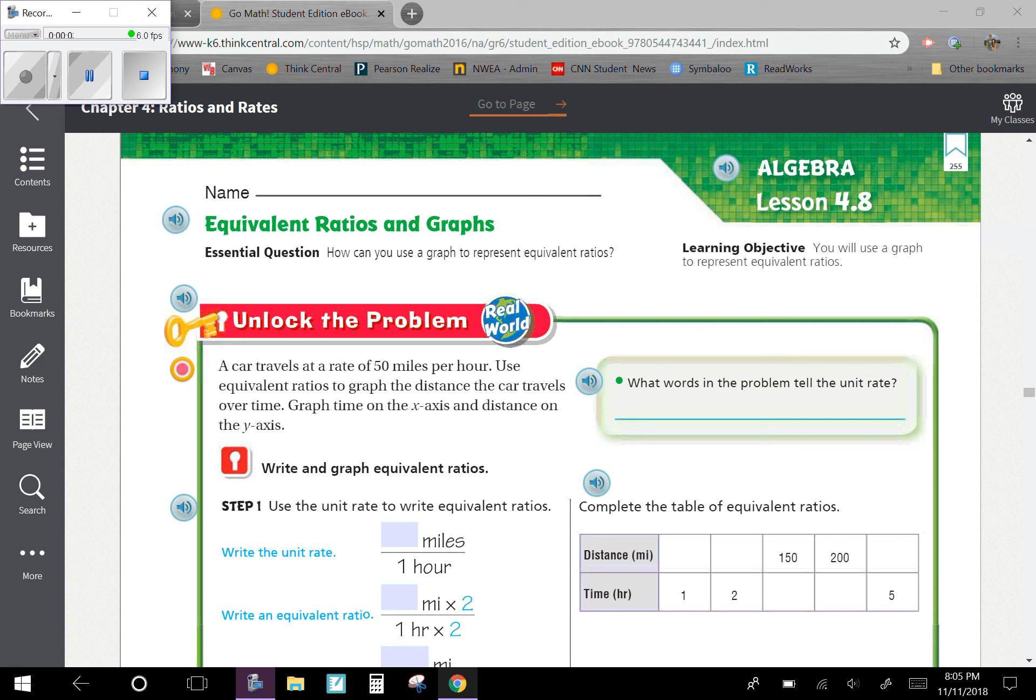Chapter 4 Lesson 8: Equivalent Ratios and Graphs. Our learning objective is that you will use a graph to represent equivalent ratios.